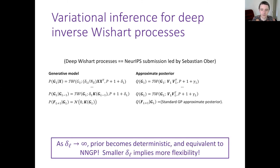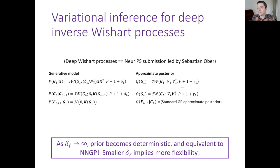There's another neat property: as one of the parameters delta goes to infinity, the prior becomes deterministic and you end up back at a neural network Gaussian process. This is really nice — we've got a model that captures the infinite neural network as a limiting case, so it has to be doing at least as well as that in practice when we train it.